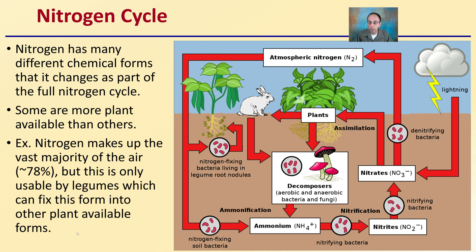Plants mainly absorb nitrogen as nitrates, and also some ammonia, while other forms can be leached out and not taken up by plants. So not only do we need nitrogen in the soil and around the plant, we need it in the proper form for uptake.